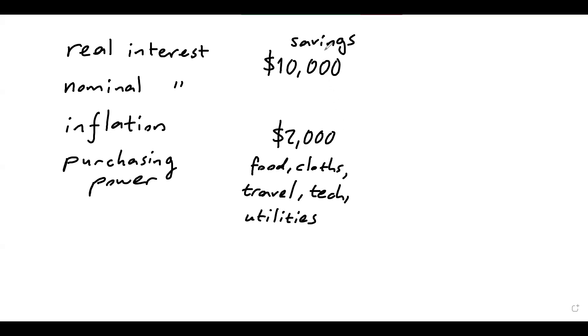Now, if you have savings of $10,000 today, and if this basket costs $2,000 today, you can purchase five baskets such as these. So that's your purchasing power for today. You can afford five baskets of these items.